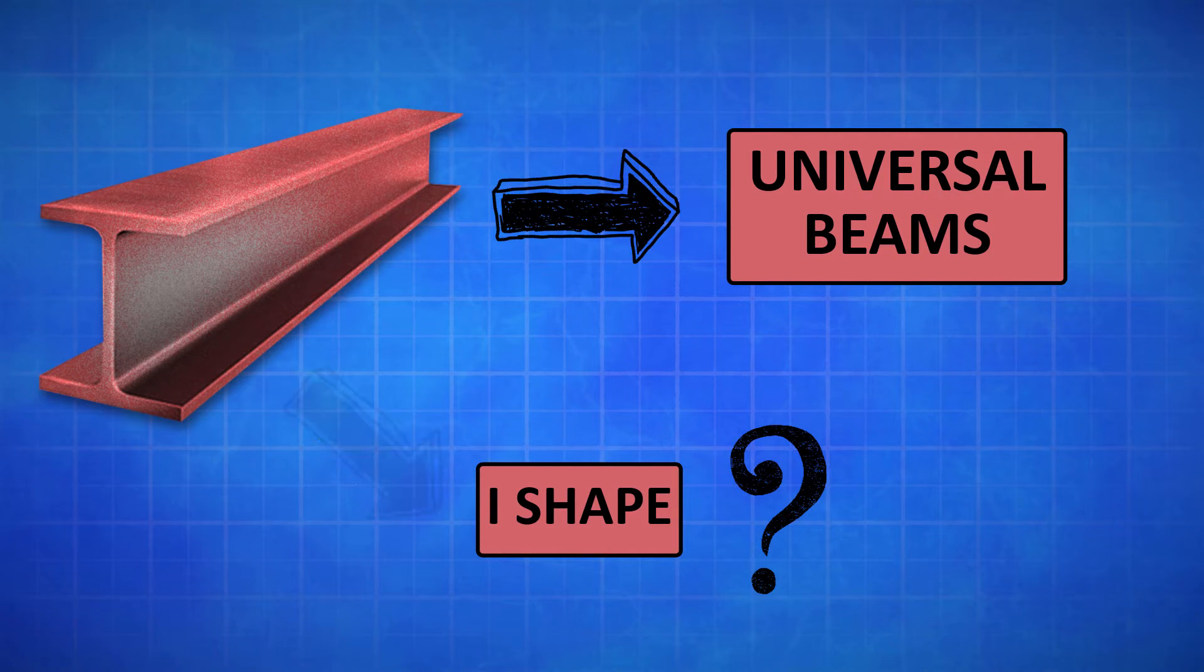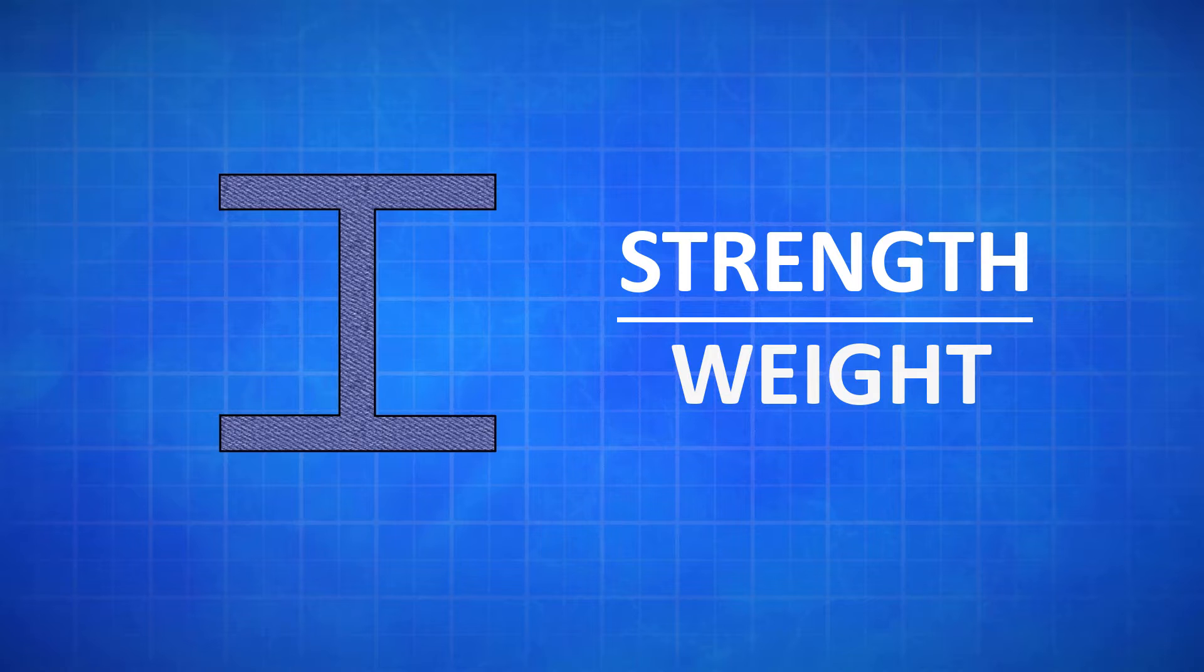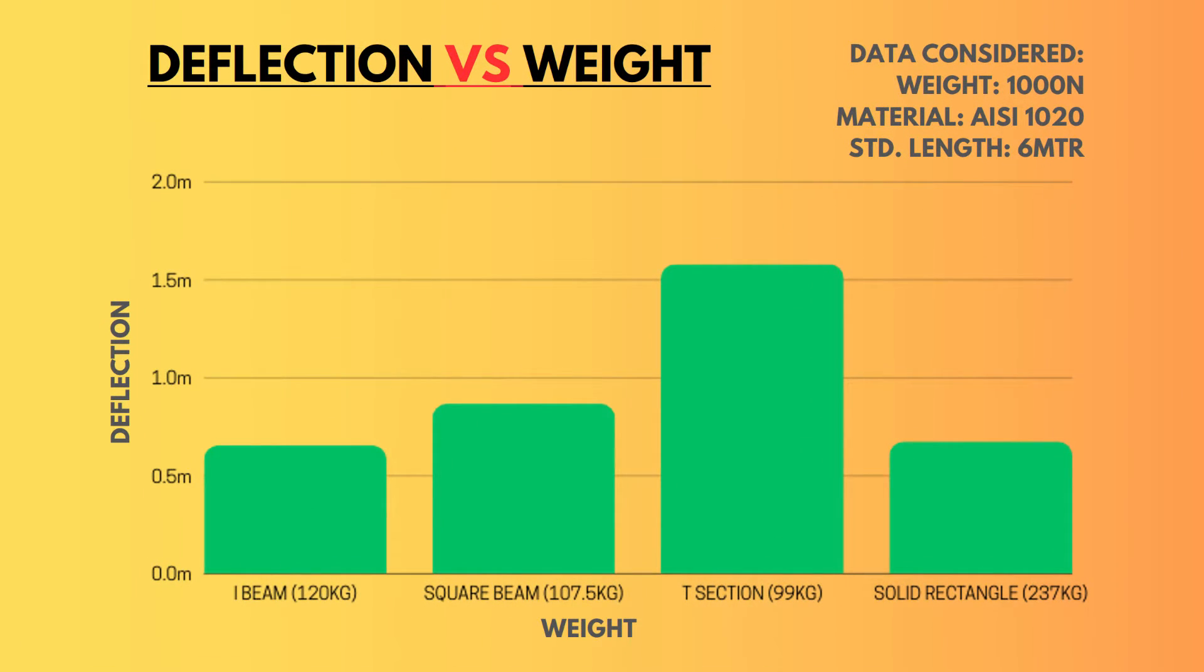The I-Beam is extensively used in British construction because it offers high strength and less weight compared to other beams. This is also known as the strength to weight ratio. In the chart provided, you can see the strength, weight, and the maximum deflection for the different beams. Among all of these beams, the I-Beam performs far better in terms of its weight.